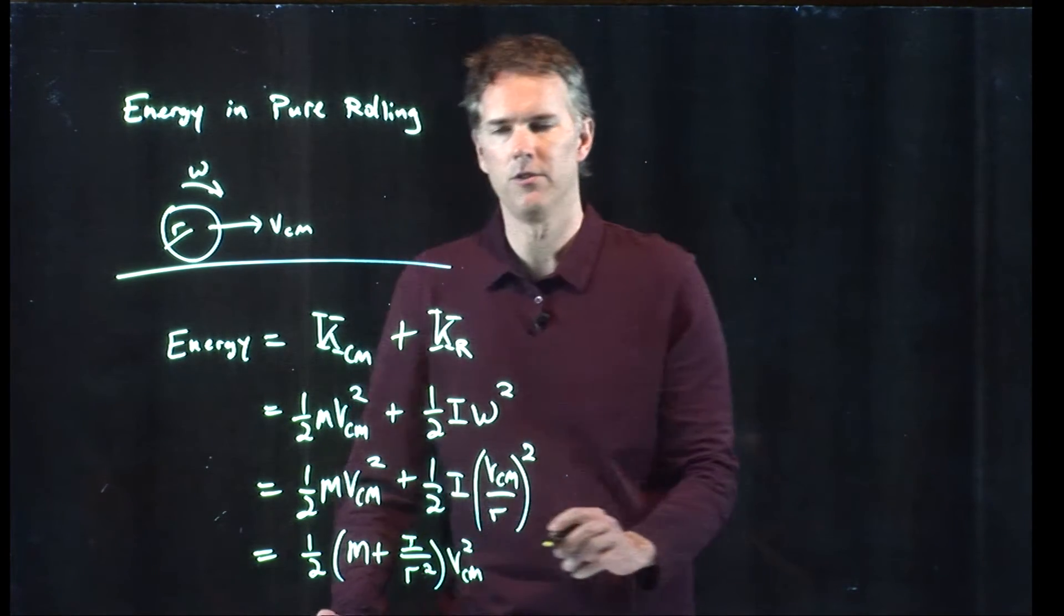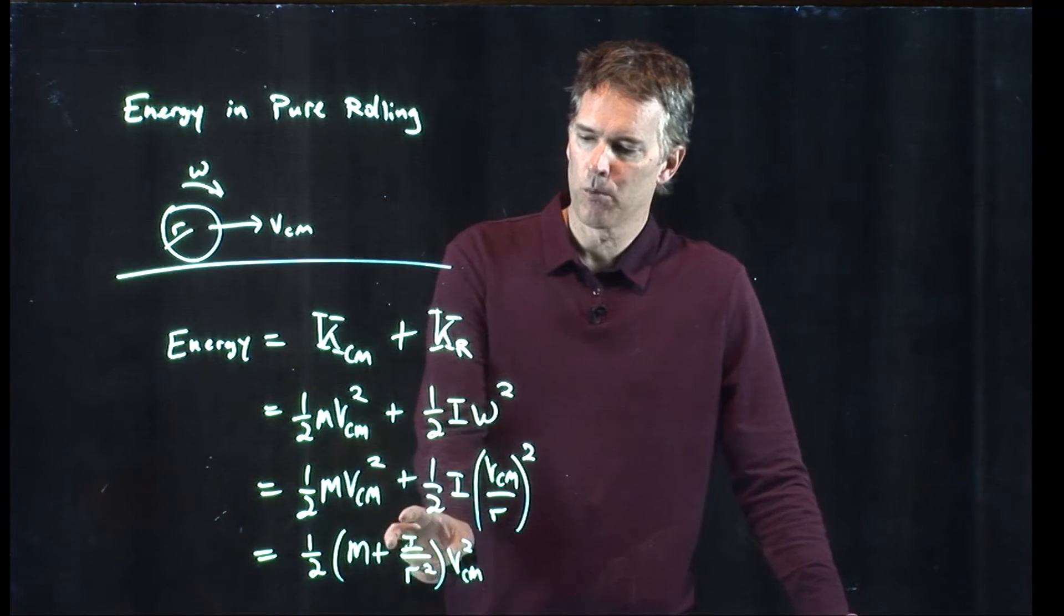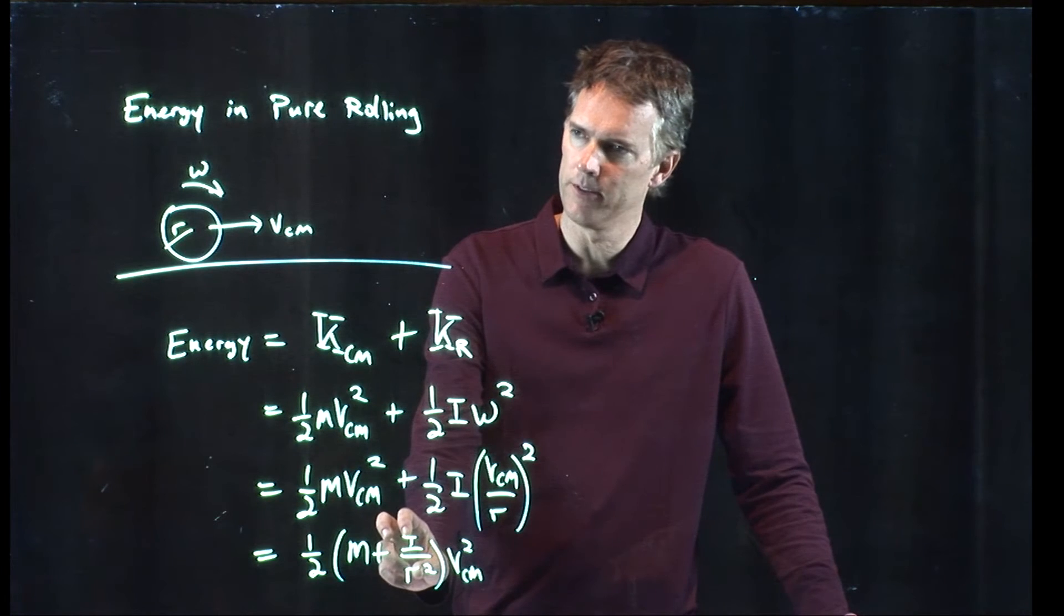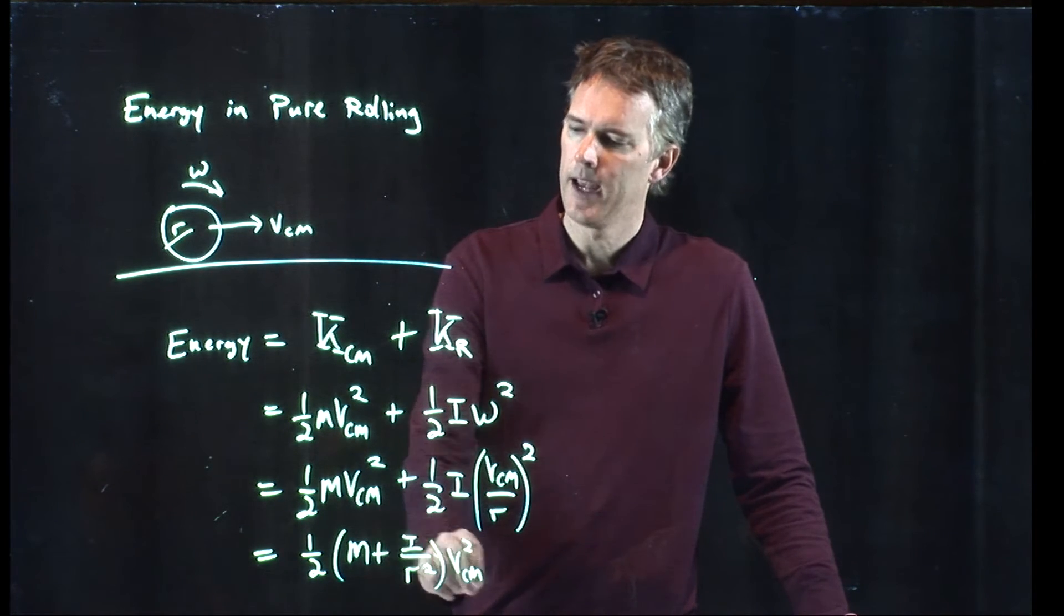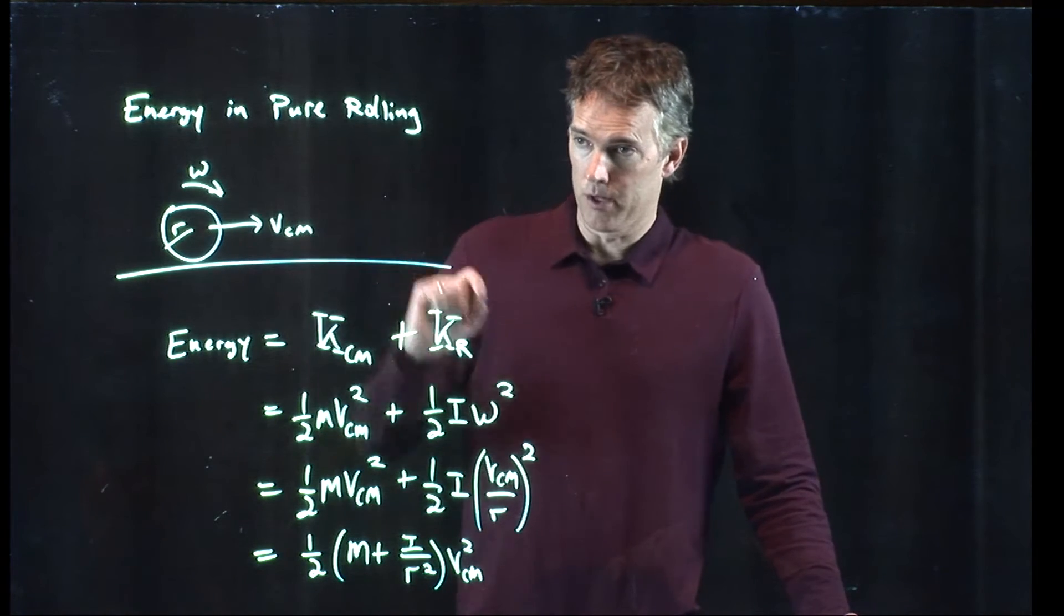This is the total energy in an object rolling along. If it's not rolling, then you drop out this last term. There's no relevant moment of inertia, and so you just get back to one-half m v squared. But if the object is rolling along, then there's energy not only in the translational kinetic energy,